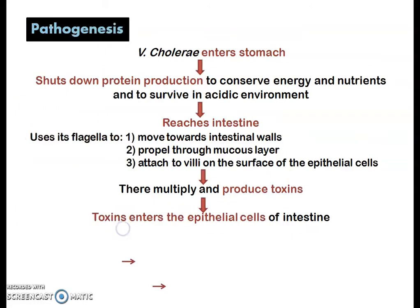Coming to the pathogenesis, when Vibrio cholerae enters the stomach by consuming contaminated food, it shuts down protein production to conserve energy and nutrients and to survive in the acidic stomach environment. Eventually it reaches the intestine and uses its flagella to move towards the intestinal walls.